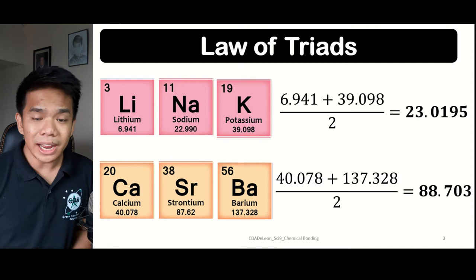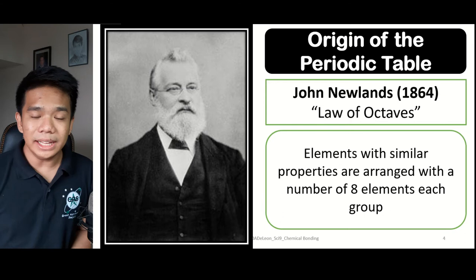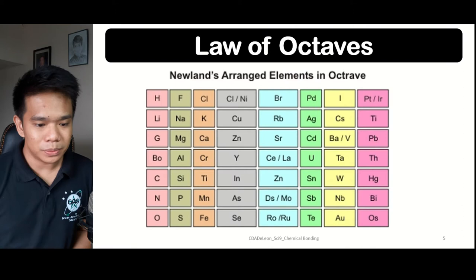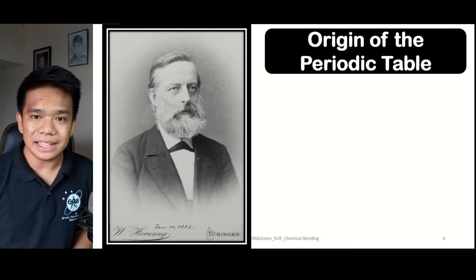On the other hand, another scientist named John Newlands in 1864 formulated the Law of Octaves, wherein elements with similar properties are arranged within groups with eight elements for every group. This is the example of the Law of Octaves that John Newlands formulated.